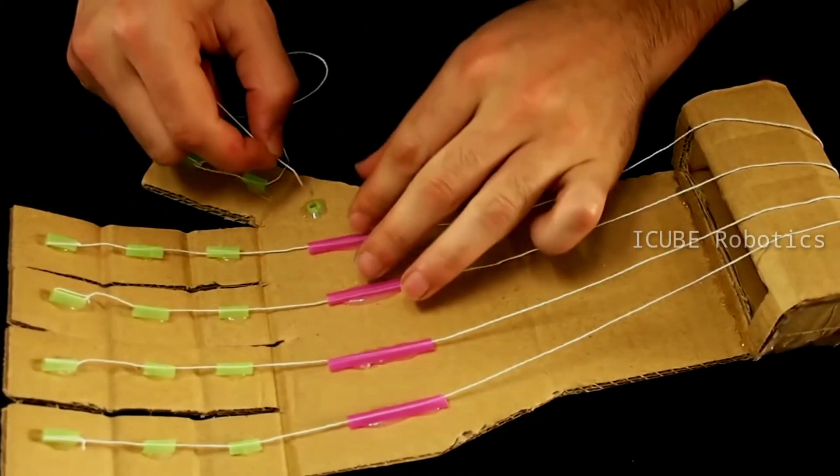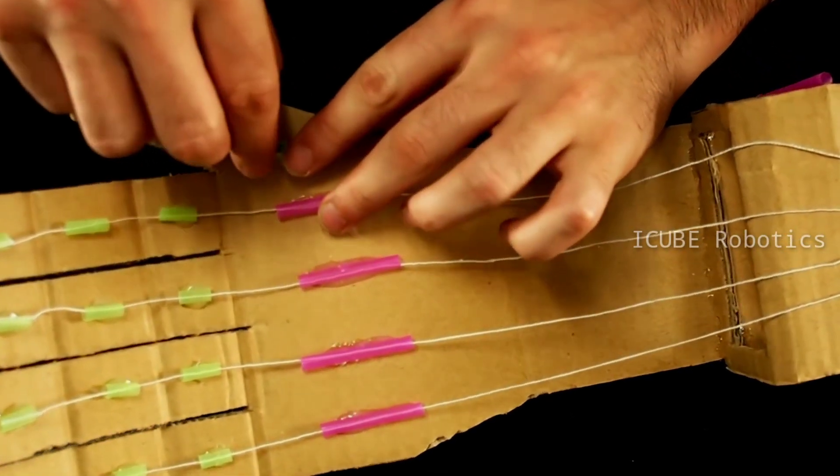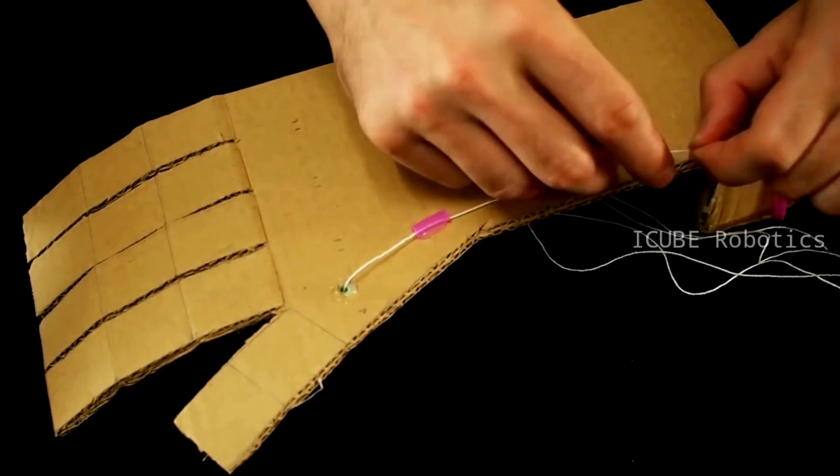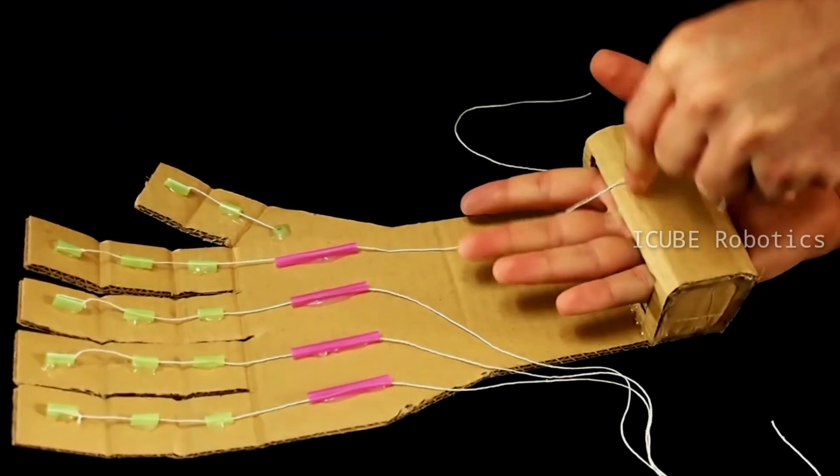Wow, isn't it amazing? Then for the thumb finger, use the upper hole and fix like this.